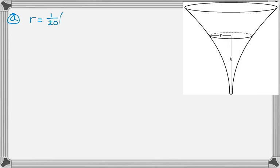So you're given this picture of a funnel, and you're told that r is 1/20th of quantity 3 plus h squared, and you're told that h is only between 0 and 10.